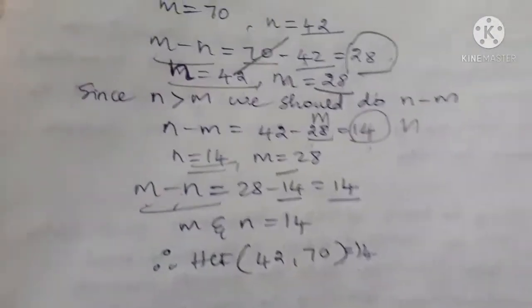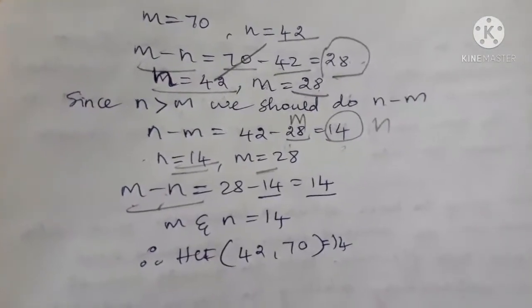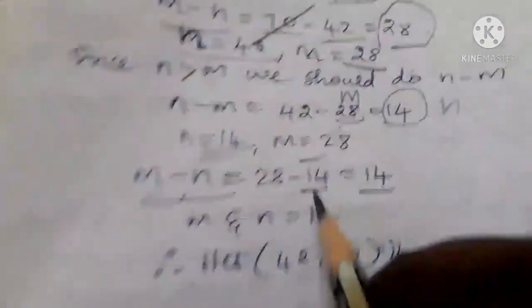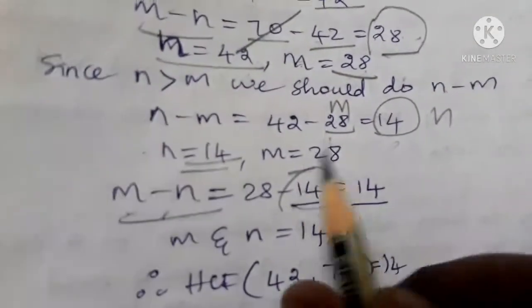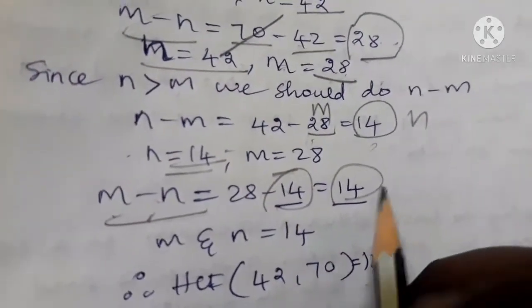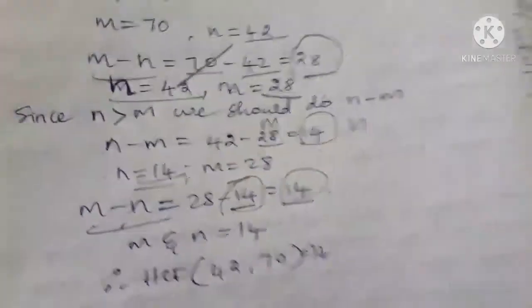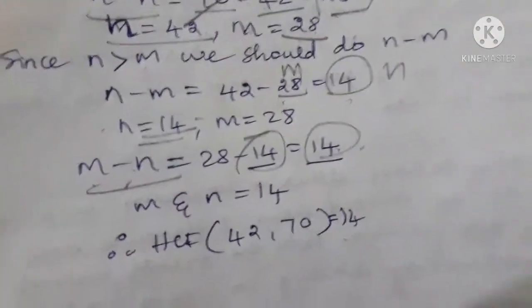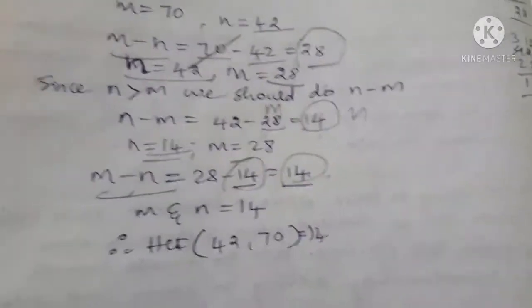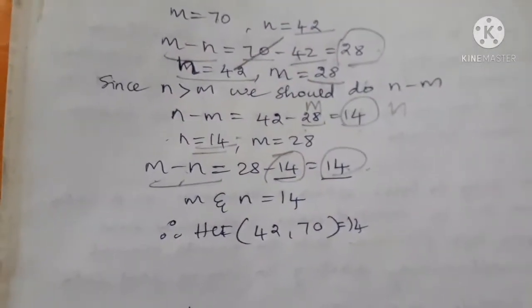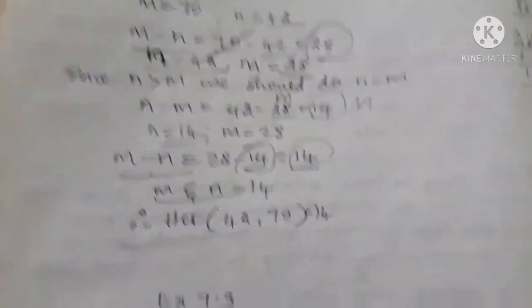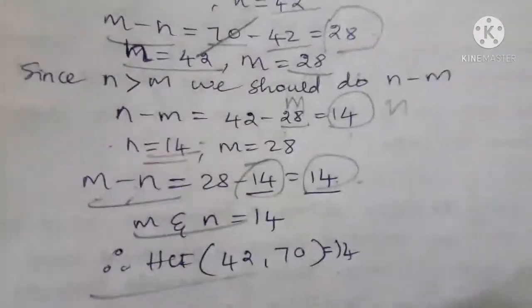You should do repeated subtraction till M and N become the same value. Here you can see we already assumed 14 as N, and now the new value is also 14, meaning M is also becoming 14. So M and N are both the same. You should stop repeated subtraction here. Therefore, M and N equal to 14, and HCF of 42 and 70 is 14.